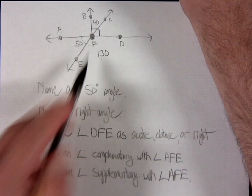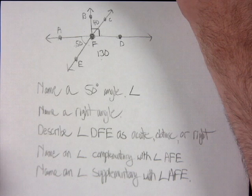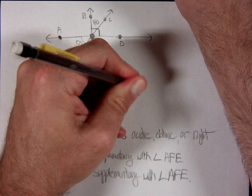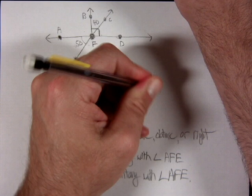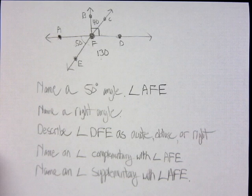To name that 50-degree angle, I need three letters because there are many angles coming out of that vertex. Starting with a point on one ray — A — then the vertex — F — then a point on the other ray — E. So angle AFE is a 50-degree angle.